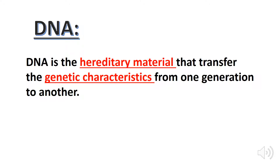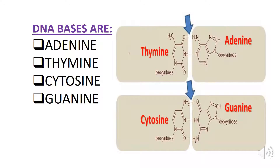So what is DNA? DNA is the hereditary material that transfers the genetic characteristics from one generation to another. The bases of DNA are adenine, thymine, cytosine, and guanine.